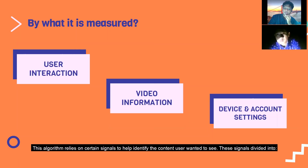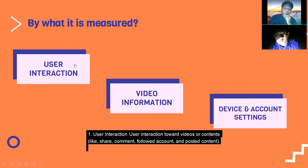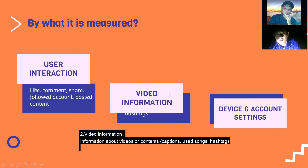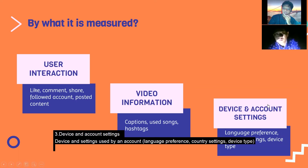This algorithm relies on certain signals to identify the content users want to see. The signals are divided into: first, user interaction — such as likes, comments, shares, follows, and posted content; second, video information — like captions, sounds, songs, and hashtags; and third, device and account settings — for instance, language preference, country settings, and device type.